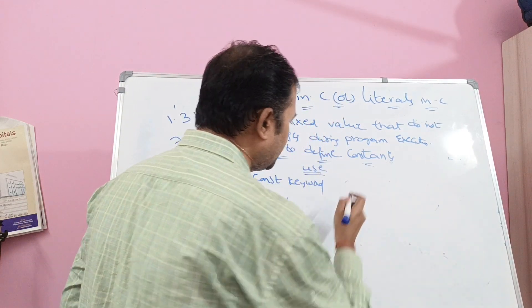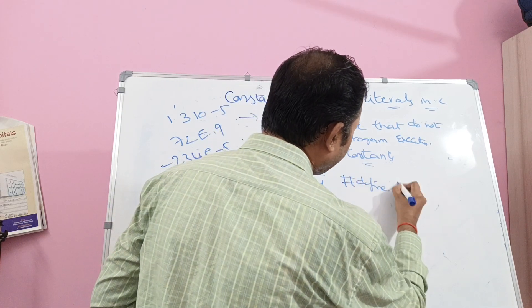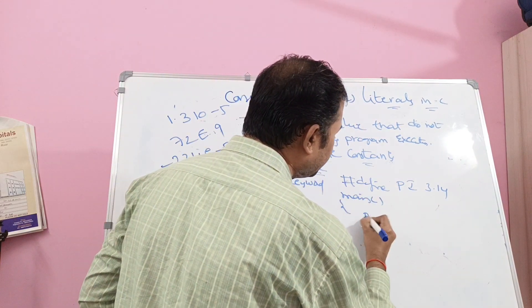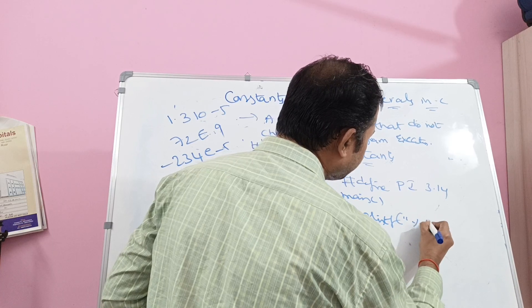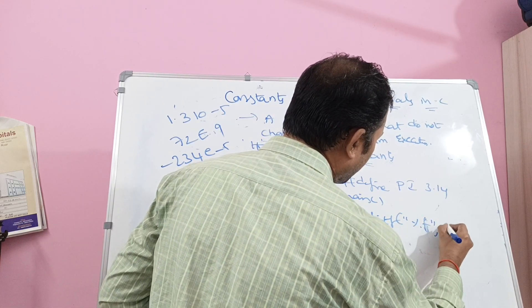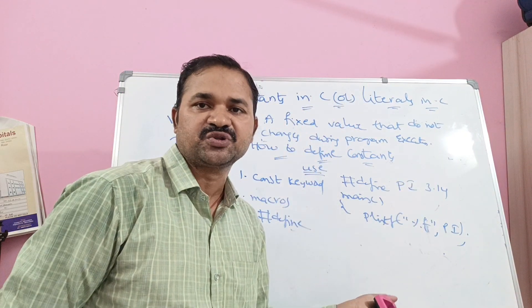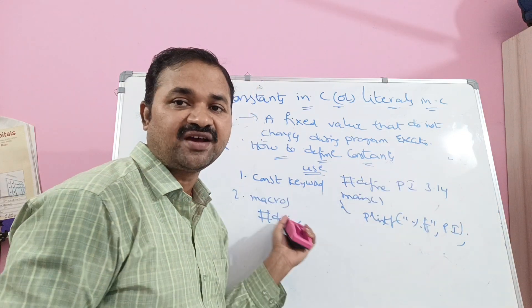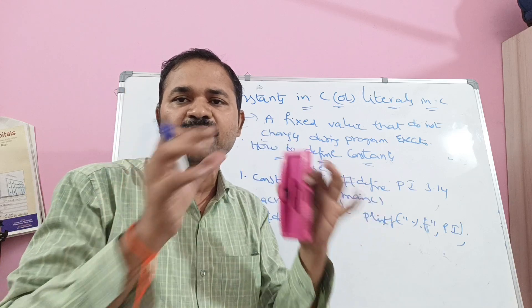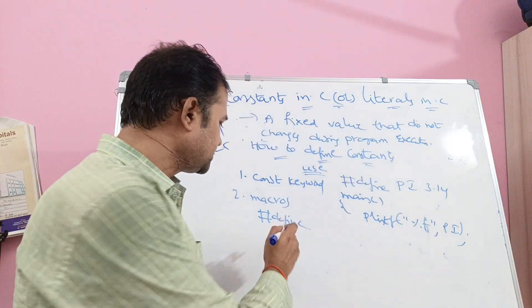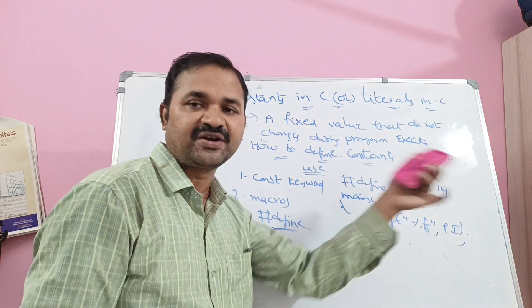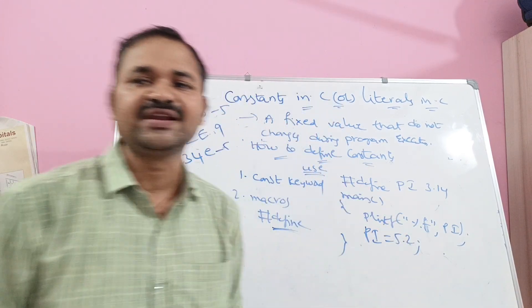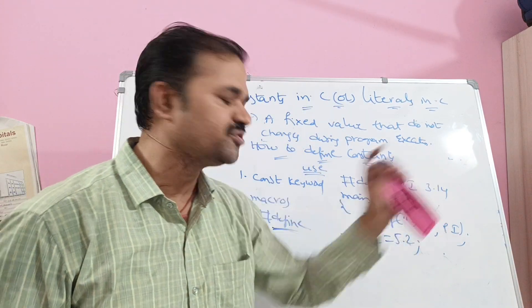The second way is using the #define preprocessor directive — that is, macros. For example: #define PI 3.14. Throughout the program, the value of PI will be 3.14. If we write PI = 5.15, the compiler will give an error message. That is the way of defining constants using #define.